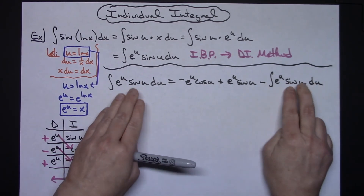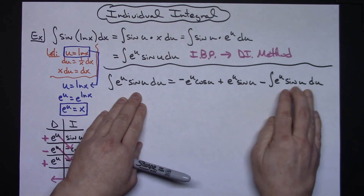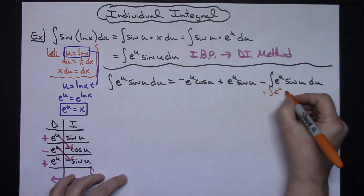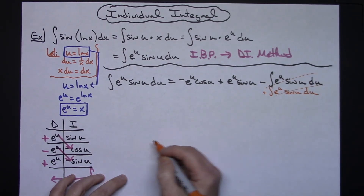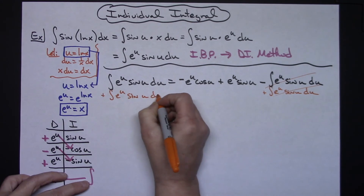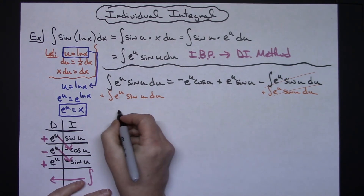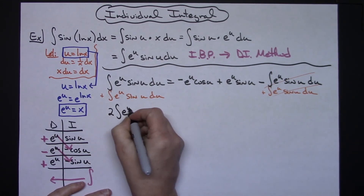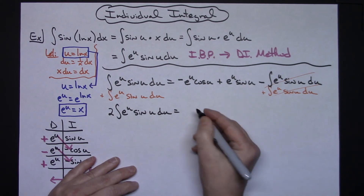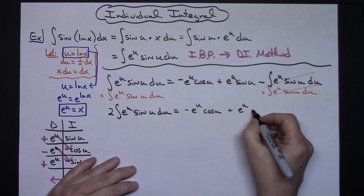Now I'm subtracting that integral on the right side. Since I have an equation I can add the integral of e to the u sin(u) du to both sides — they cancel on the right, and on the left I get 2 times the integral of e to the u sin(u) du, which equals negative e to the u cosine(u) plus e to the u sine(u).